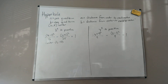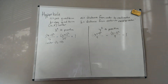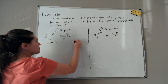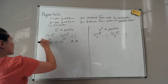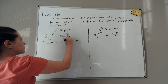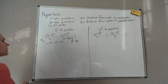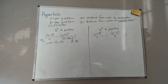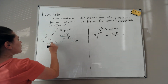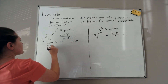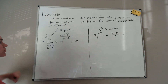The hyperbola opens left and right because x-squared is positive. Remember, a-squared is always under the positive quadratic term, so a = √16 = 4 and b = √25 = 5. This is not an ellipse — for a hyperbola, a simply goes with the positive quadratic regardless of which value is greater.